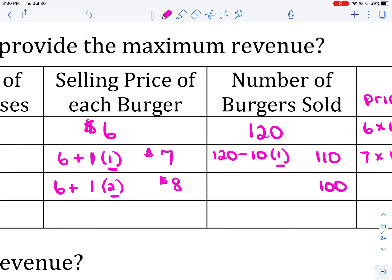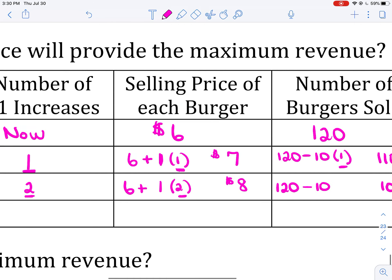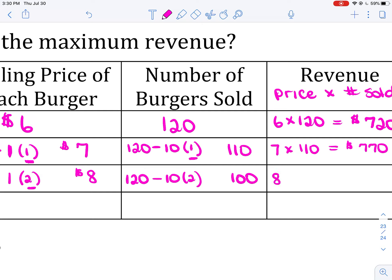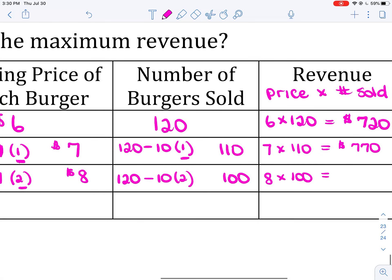I'm now going to have only 100 burgers sold. I started off selling 120, lost 10 every time I increased the price, and I increased it twice — so it's 120 minus 10 times 2, giving 100. My revenue is $8 times 100, which is $800. I'm doing even better!